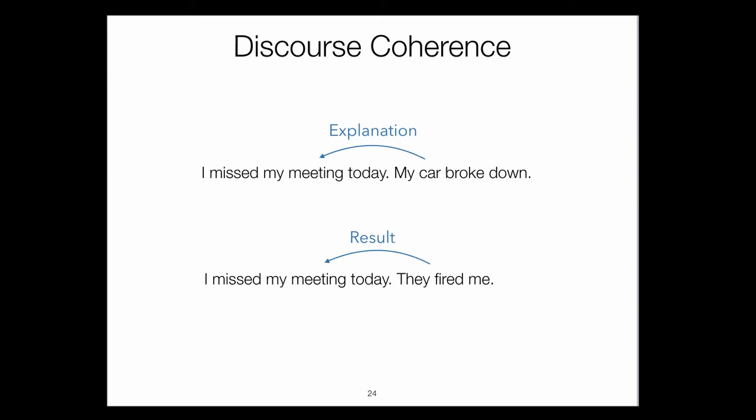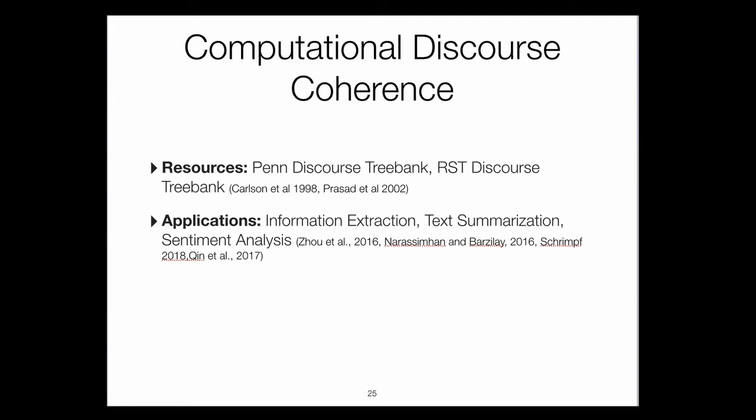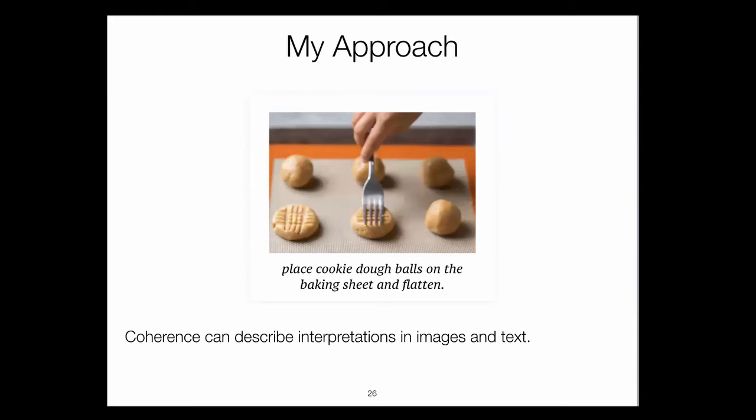The value of coherence relations in NLP is largely due to annotation campaigns almost 20 years ago, where people put together large corpora such as the Penn Discourse Treebank or RST Discourse Treebank, annotating these inferences and relations between discourse segments in Wall Street Journal articles. Since then, there have been works in sentiment analysis, text summarization, and information extraction that use these kinds of inferences to design better models.